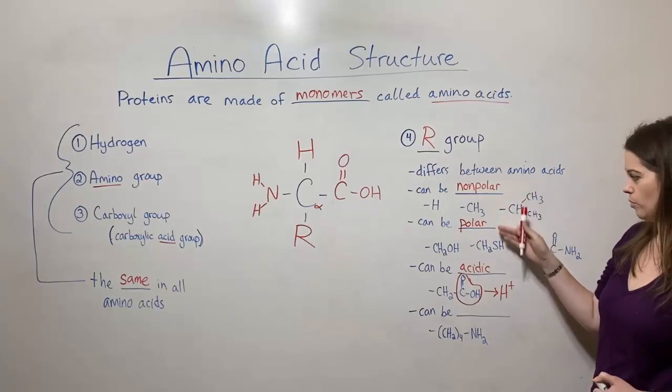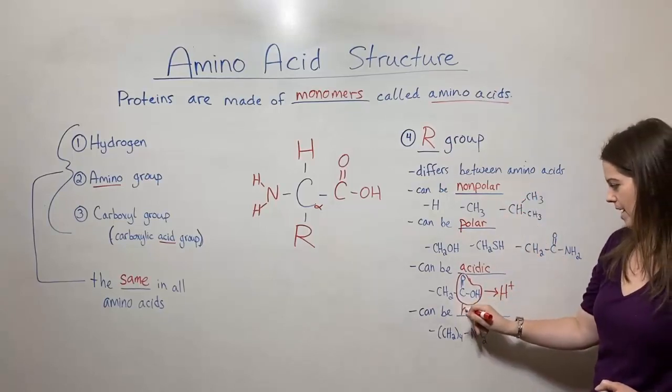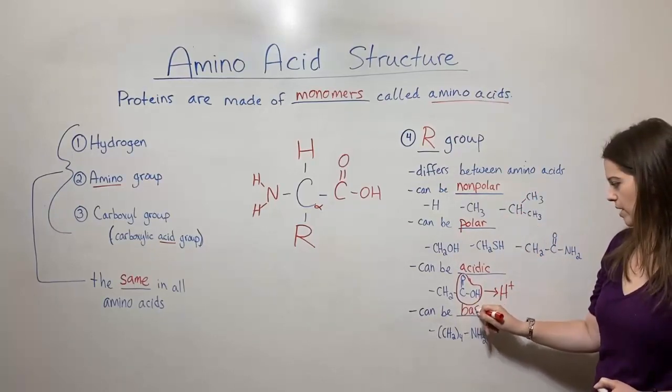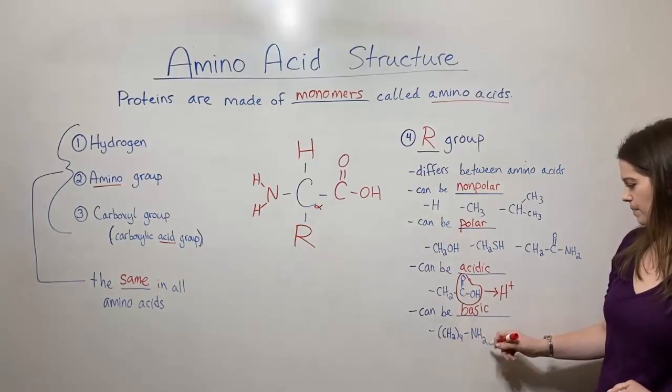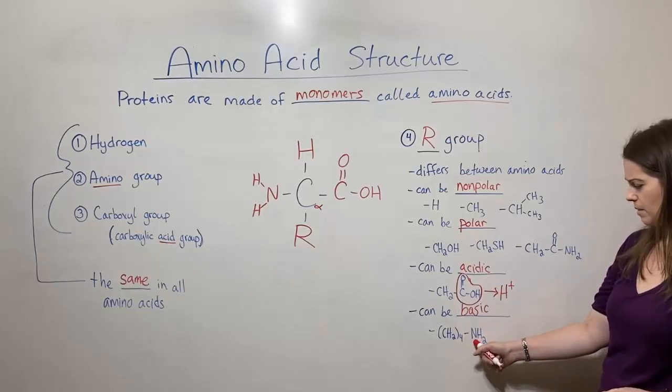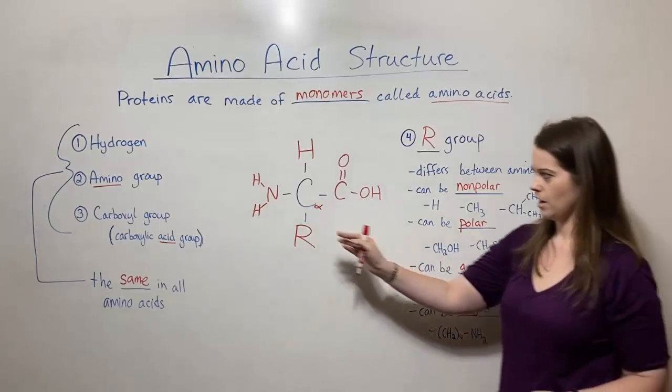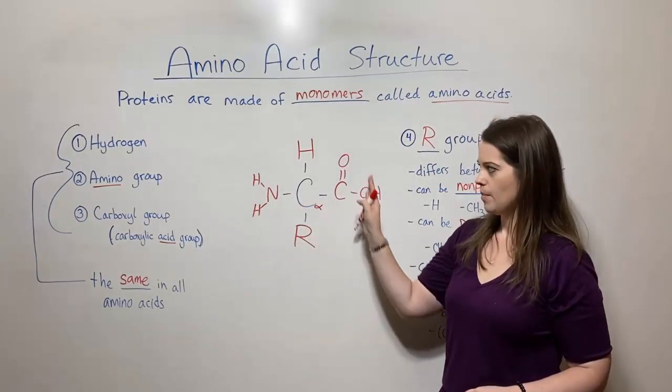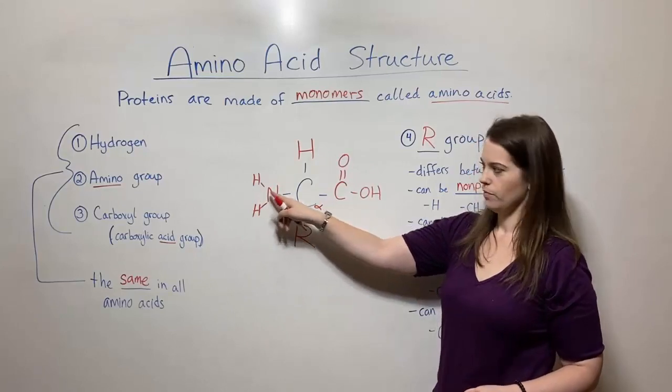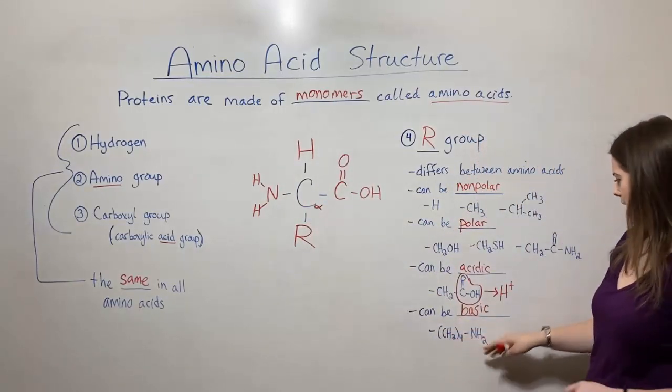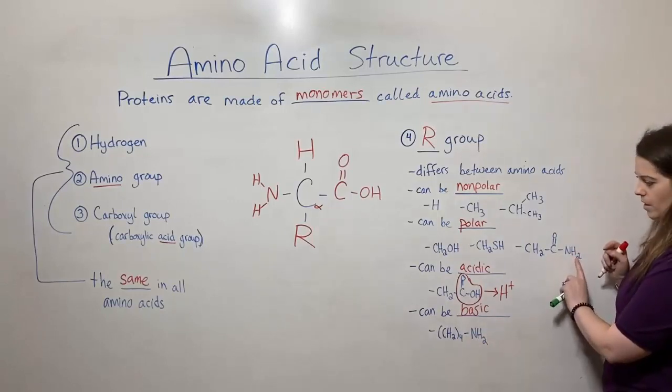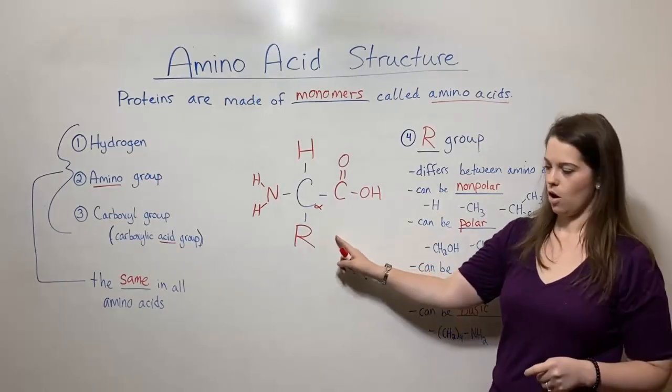And then finally in addition to non-polar, polar, and acidic you can probably guess this one, they can also be basic. For example this one right here is basic and it's basic because you've got this amino group on the end. Notice again all amino acids have that amino group to the left of that alpha carbon but a few also can have amino groups. Here's another one up here as part of their R group.